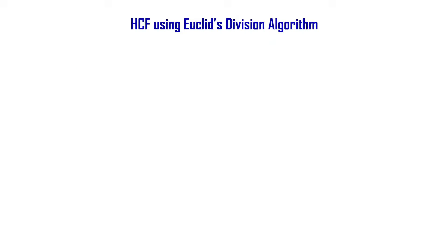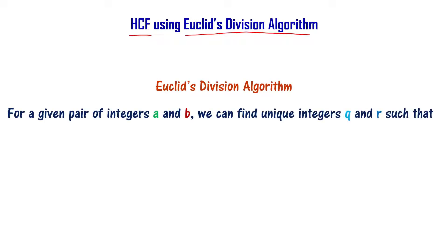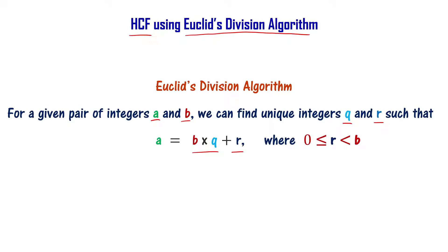Let us now learn about how to find HCF of two numbers using Euclid's division algorithm. Euclid's division algorithm says that for a given pair of integers a and b, we can find unique integers q and r such that a equals b times q plus r, where 0 is less than or equal to r, and r is less than b.